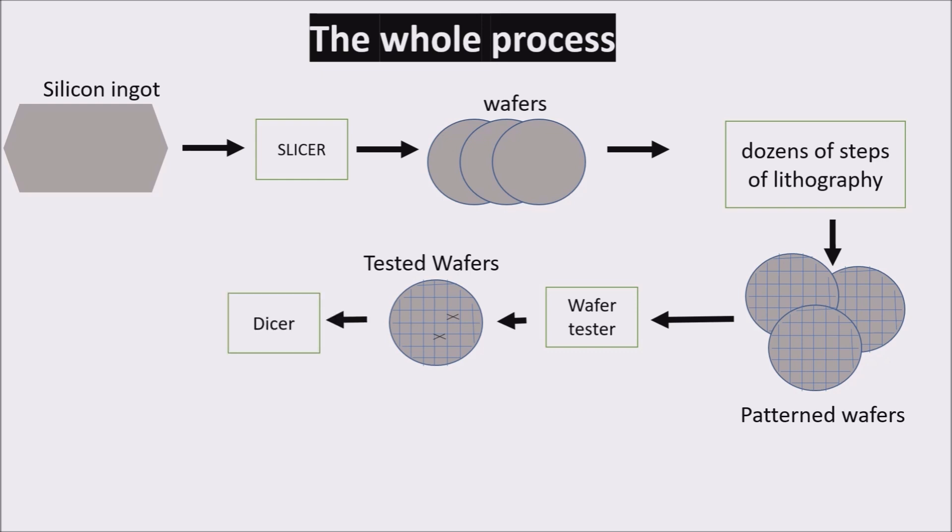The wafer is chopped into these components called dies, or informally chips. Dicing enables you to discard only those dies with the flaw rather than the whole wafer.